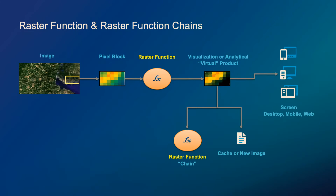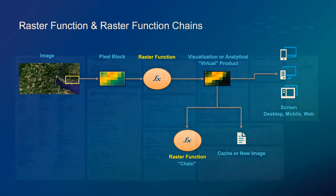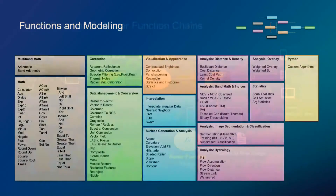Here's a notional diagram of how raster functions and raster function chains work. You have a source image with pixels coming from it; on top of that we apply a raster function which transforms your pixels into new values. Then we can add another raster function and start chaining things, or push those pixels directly to the screen via ArcGIS Pro, a web map, or your mobile device. Out of the box there are many raster functions: arithmetic math functions, correction functions for apparent reflectance and geometric corrections like orthorectification, and hydrological functions like fill, flow accumulation, and flow direction.